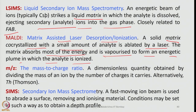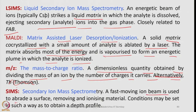M/Z — a very important term — mass-to-charge ratio: a dimensionless quantity obtained by dividing the mass of an ion by the number of charges it carries. SIMS — secondary ion mass spectrometry: a fast-moving ion beam is used to sputter a surface, removing and ionizing material. Conditions may be set to obtain a depth profile of the sample being analyzed.